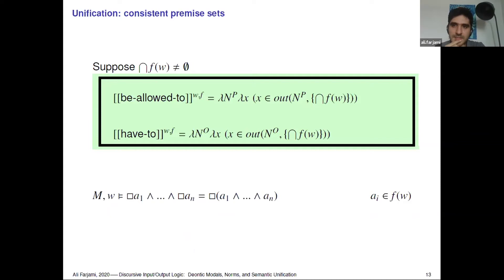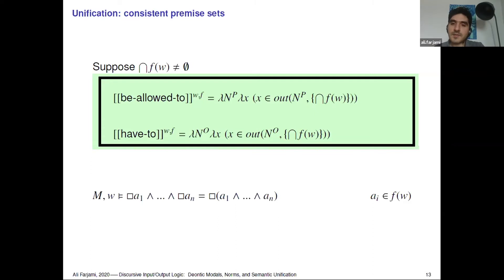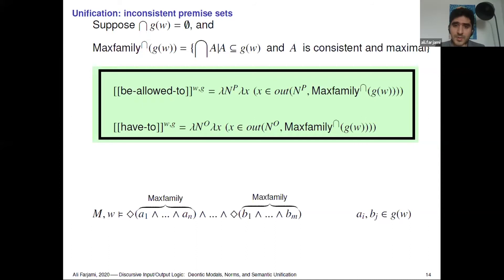The semantical unification works as follows. In the actual world, the modal base function delivers factual, consistent information, over which we can perform conjunction and use representation theorems with Boolean algebra. We put this information as input into our AND-operations and obtain two kinds of output: one for deriving permission and one for deriving obligation, similar to box and diamond. When we have inconsistent information — an ordering source — we find the maxima and use them as inputs into our output operations.